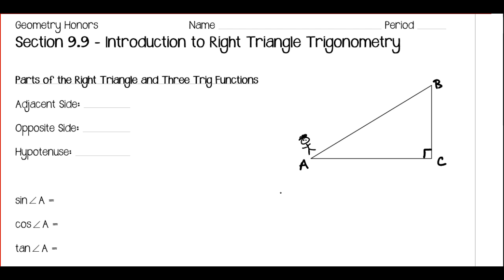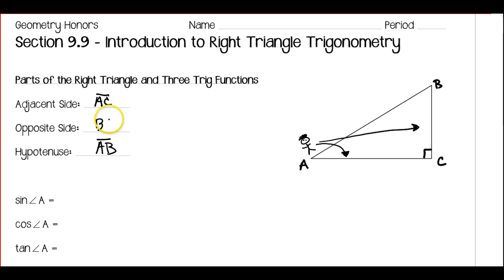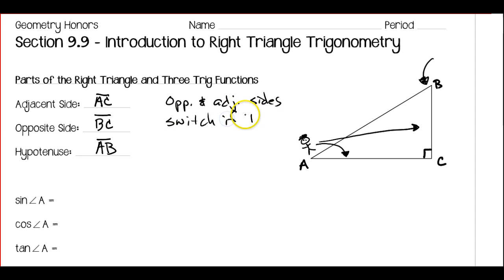The hypotenuse never changes. The hypotenuse in this triangle is AB — that's segment AB. The adjacent side is the side that we're next to, but it can't be the hypotenuse. So the side of the triangle that we're next to, it's got to be one of the legs, is side AC. And then the side that's clear across the triangle would be the opposite side, so that would be side BC. My opposite and adjacent are going to switch if I happen to be standing over here at angle B.